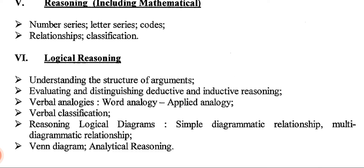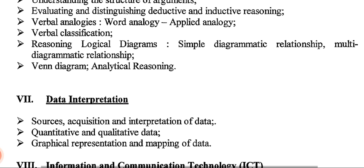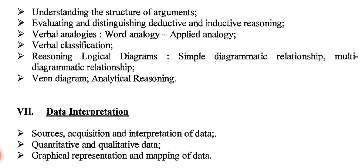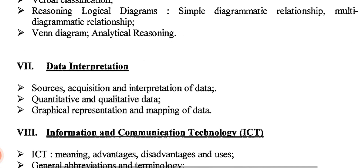Section seven is Mathematical Data Interpretation, covering sources, acquisition and interpretation of data, quantitative and qualitative data, and graphical representation and mapping of data. Merely knowing this syllabus won't help you — you have to go through past papers to understand what kind of questions come from Data Interpretation and what kind of preparation is required for this section.